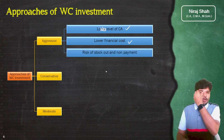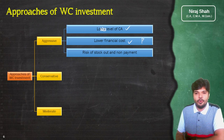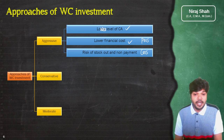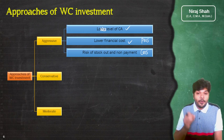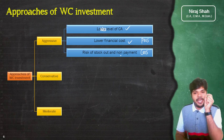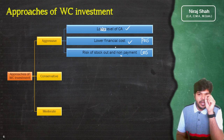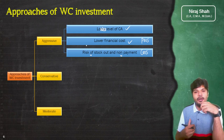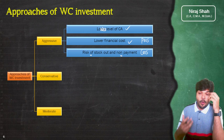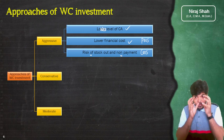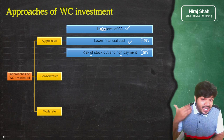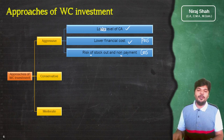लेकिन aggressive policy के cons भी हैं — अगर current assets में कम investment करोगे तो stock out होने की possibility है। Debtors non-payment कर दें, payment time पर न करें, उसकी भी possibility है। आप पहले sale कर दो फिर पैसे मांगने जाओ तो bad debt हो जाए। या बहुत कम cash होने की वजह से business operations में दिक्कत आ सकती है।